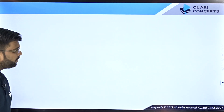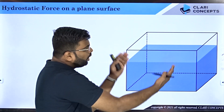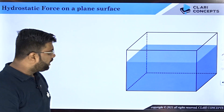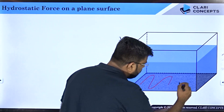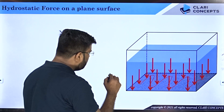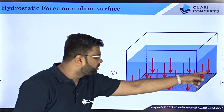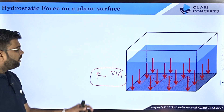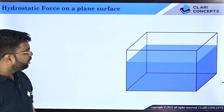Consider a tank with six flat walls — plane surfaces — filled with water up to a certain height. If I want to measure the force that water applies on the bottom wall, the pressure applied on this wall is p = p₀ + ρgh, and pressure is equal at each point on that wall. So force equals pressure times area, because pressure is the same at all points.